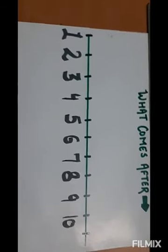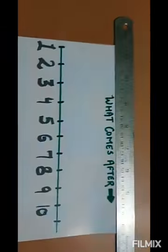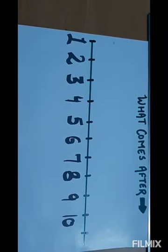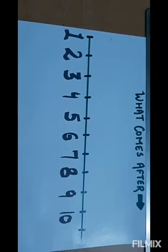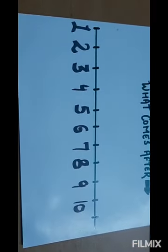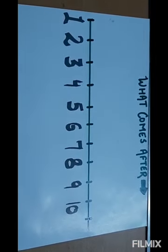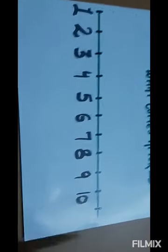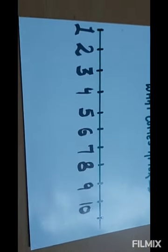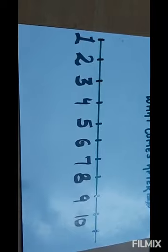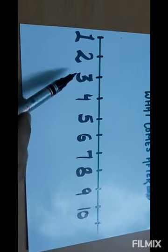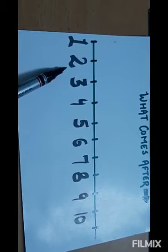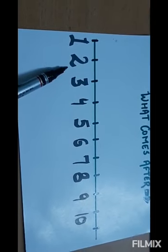Good morning students. As you remember, we have done forward counting and now we are going to learn what comes after. If you see here, this is a number line — we can extend the number line as long as we want. Now if we see a number here, let's say two, what will the two say?